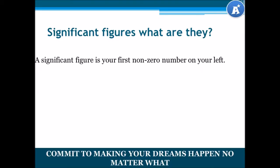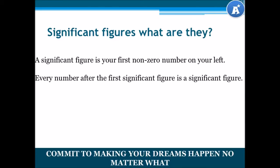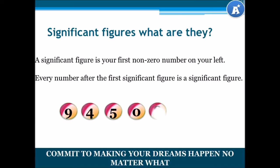A significant figure is your first non-zero number on your left. Every number after the first significant figure is considered a significant figure. Let's look at a number. Let's say we have the number 94,508. Our first significant figure, which is our first non-zero number on our left, will be 9.